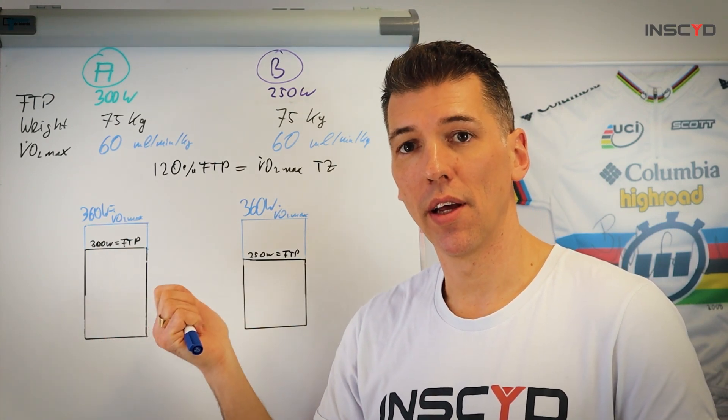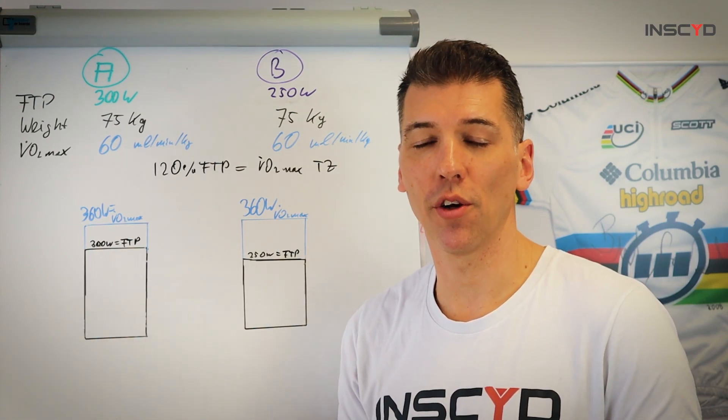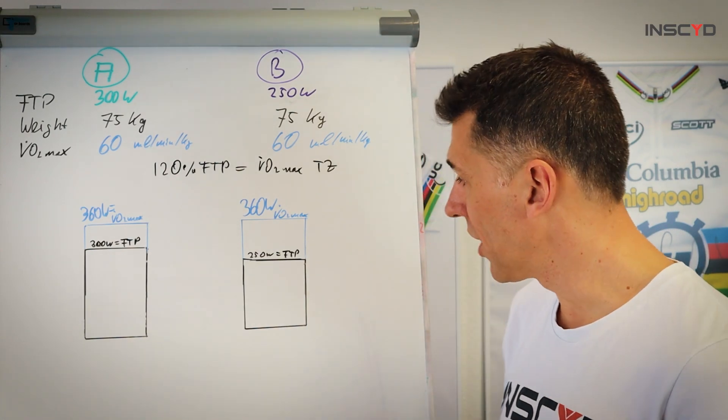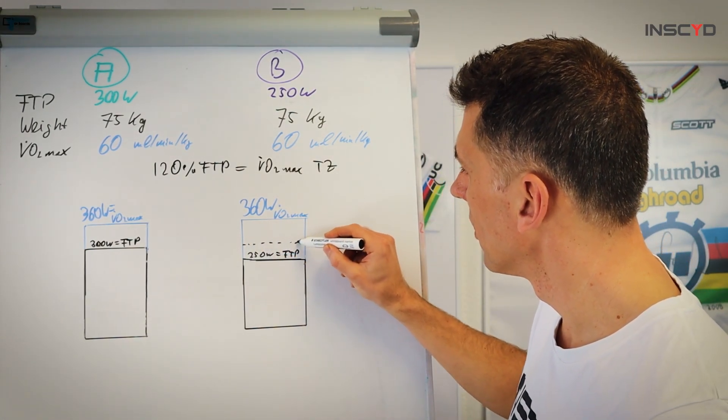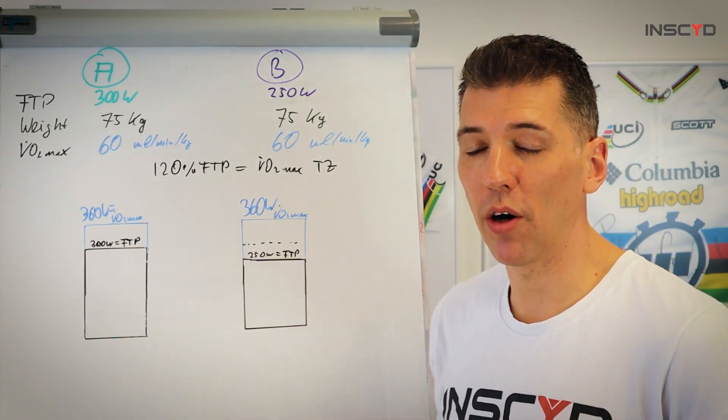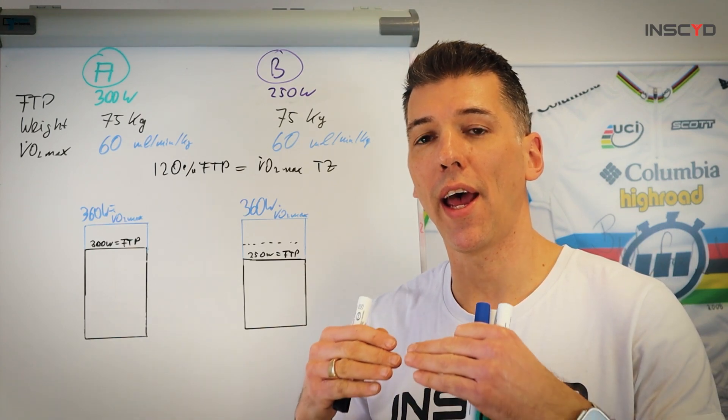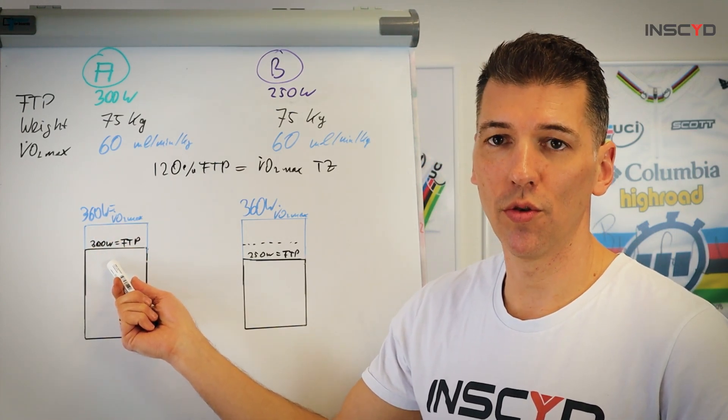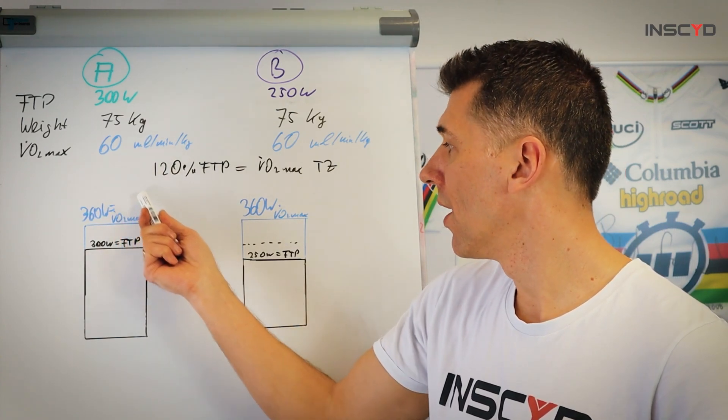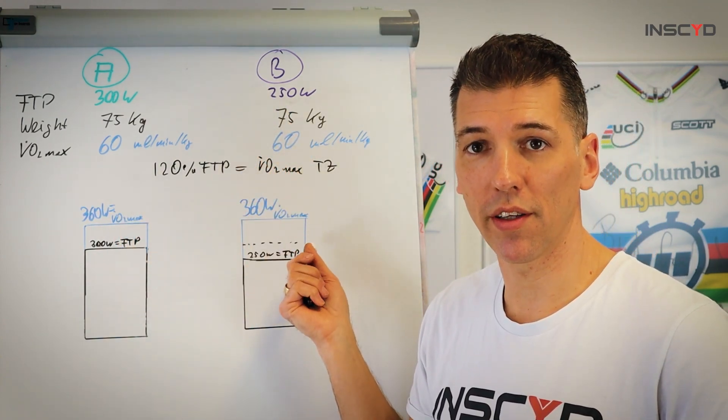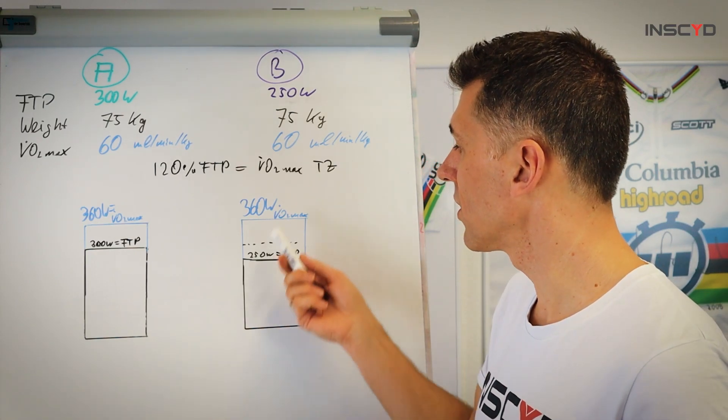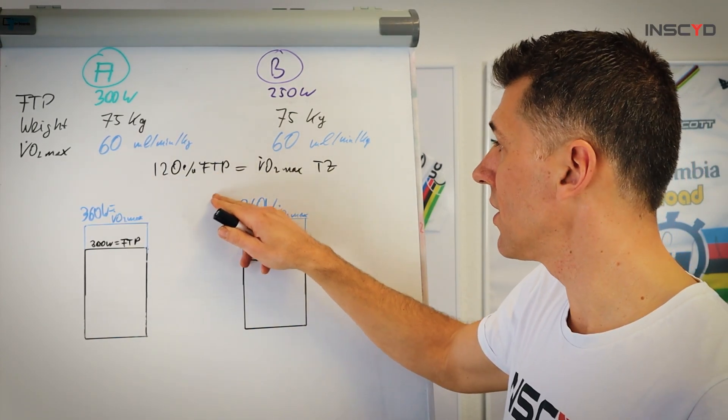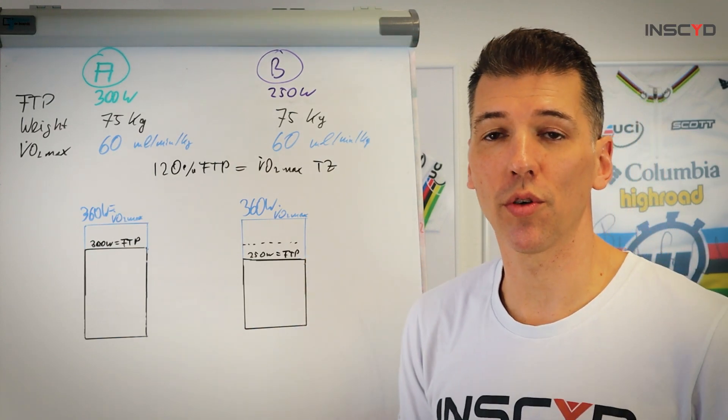For athlete A, this athlete actually exercises at 100 percent of his VO2max power. Athlete B, however, FTP of 250 watts, 120 percent brings him only to 300 watts. But his VO2max power is 360. So he's exercising not at the same percentage of his VO2max. And that's simply because the utilization of VO2max at FTP for athlete A is relatively high, and the utilization of this athlete here because of his training status, his physiology, his phenotype and so on, is lower. And therefore going to 120 percent of FTP is not cutting it for him. This athlete stays at a much lower percentage of his VO2max.